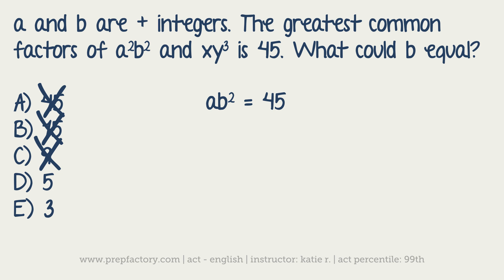9 squared is 81, I don't want that. And then if you look at 5 squared, that would be 25. 25 is not a factor of 45, so we can cross that one out too. So we're left with 3.